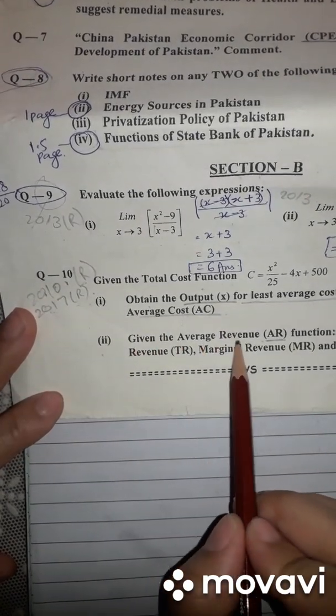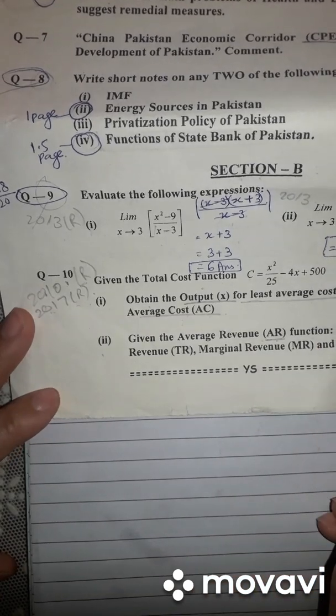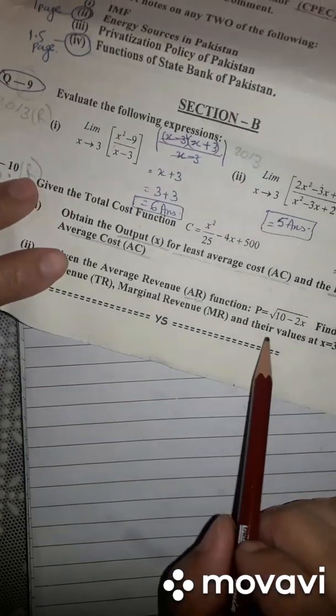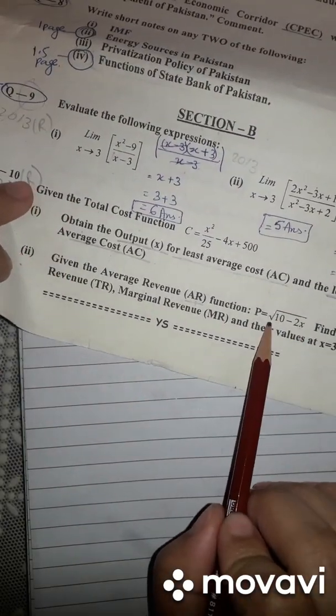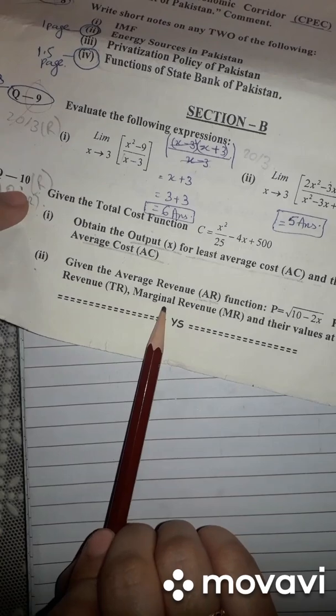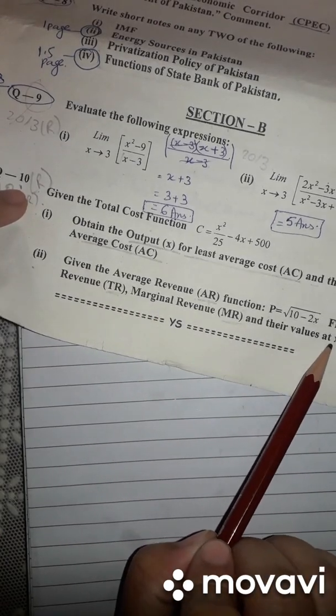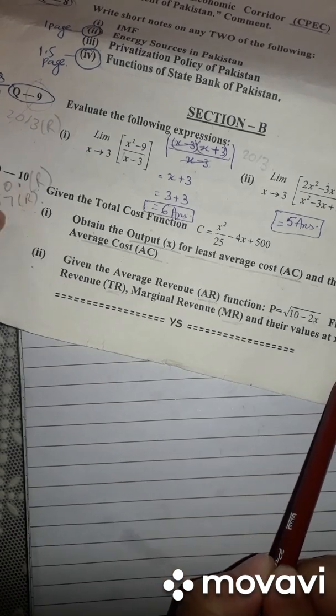Given the average revenue AR function, it is given. P is equal to 10 under root 10 minus 2X. Find the total revenue, marginal revenue MR, and their values at X is equal to 3.